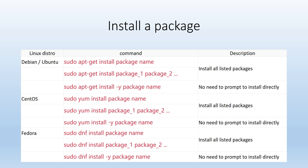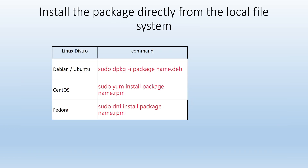Once we know the name of a package, we can use the following command to install it. We can also install a package directly from the local file system after obtaining the package file directly from an external source.